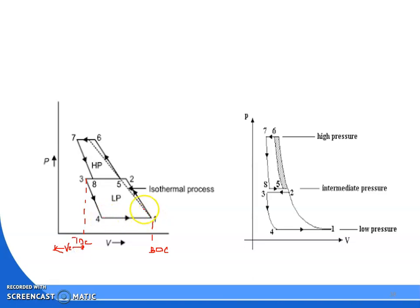On the PV diagram: 4 to 1 is suction, 1 to 2 is compression, 2 to 3 is delivery, and 3 to 4 is expansion — that is the low-pressure cylinder cycle. For the high-pressure stage: 8 to 5 is suction, 5 to 6 is compression, 6 to 7 is delivery, and 7 to 8 is expansion.